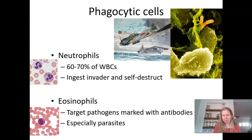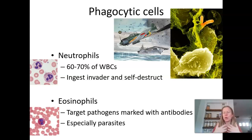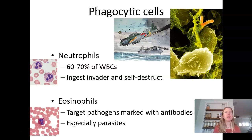Eosinophils typically go after multicellular parasites. You can consider them phagocytic, but usually what they're attacking is too big to actually be engulfed. So they'll often scoot up next to it and use things like nitric oxide and different enzymes to destroy those parasites.